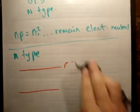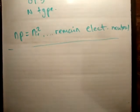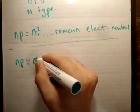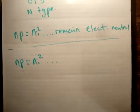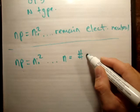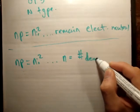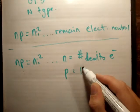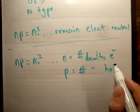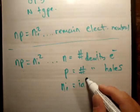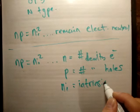That's how you'd look at n-type. P-type is just the opposite. We had the equation n times p equals ni squared; that remains constant. n is the number density of electrons, p is the number density of holes, and ni is the intrinsic number density.